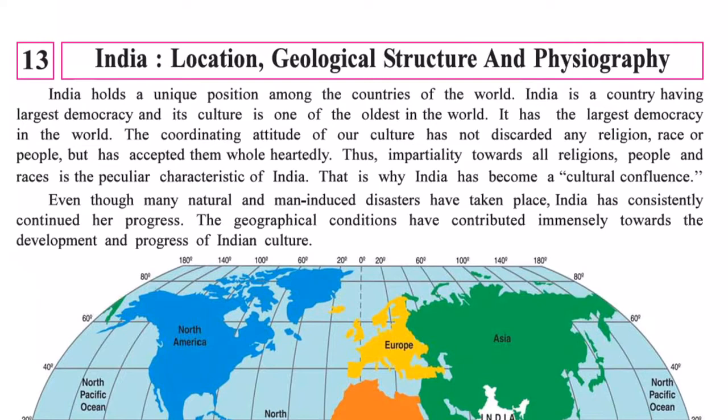Secular means it is a country where there are no barriers of any religion and people are free to follow the religion of their wish. Since these varieties in religion, culture, languages, food style, and dressing style are found in India, India has the distinct quality of a continent. Therefore, India can be called a sub-continent country because it has all the qualities which are found in any continent.